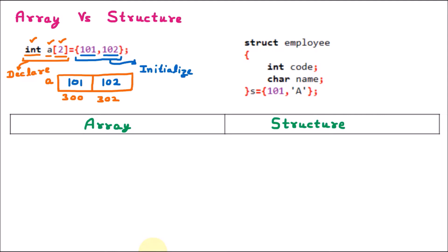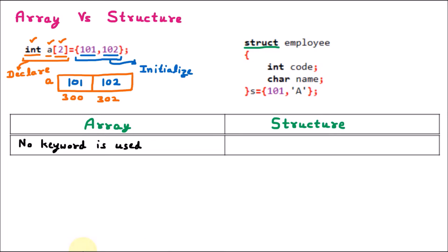Now we move towards the structure. In the structure we write 'struct', and we know that struct is a keyword. This is the first difference: in array we don't use any keyword, but in structure we use the struct keyword to define the structure.